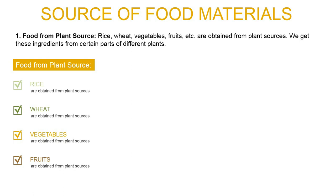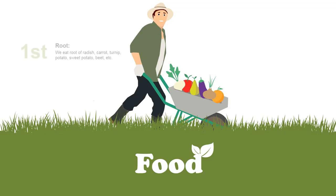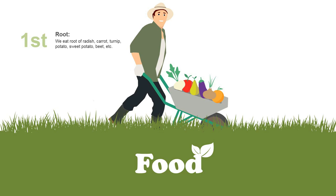We get these ingredients from certain parts of different plants. Some examples of edible plant parts are shown in the image. As you can see in this picture, these are the different edible plant parts. Edible parts means the eatable parts of a plant. We will discuss these edible parts one by one. First is root. We eat the root of radish, carrot, turnip, potato, sweet potato, beet, etc.